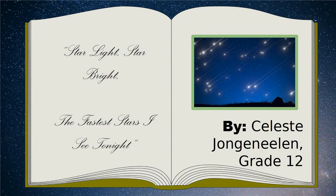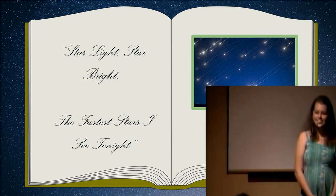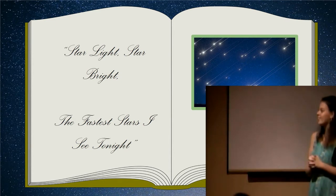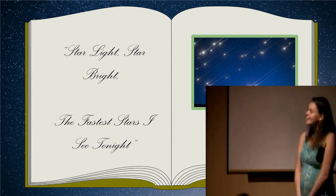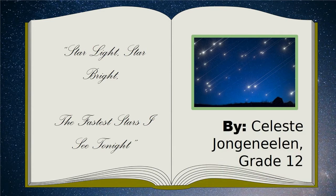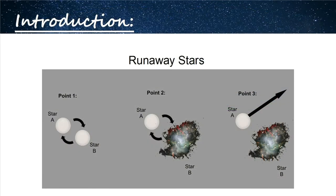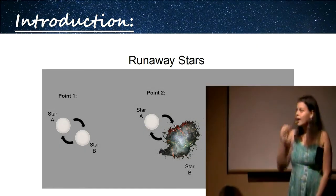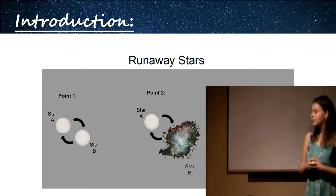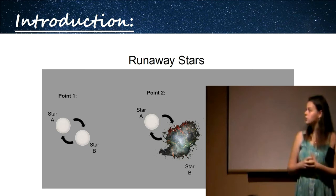Oh there we go. I can technology, I promise. Okay, so I think a lot of us know the classic nursery rhyme, star light, star bright, the first star I see tonight. But today I'm going to do a little twist because I observed some really fast stars, so I decided to call my presentation star light, star bright, the fastest stars I see tonight. As JD mentioned, my name is Celeste Young Nailin, and I am a senior. Okay, so I'm talking about fast stars. Well, what are these fast stars? The ones I'm talking about most today are going to be called runaway stars, which, like the name suggests, are abnormally high velocities compared to an average star.